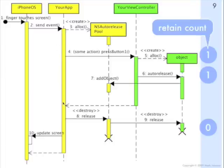We're exiting out of the event loop here, and after all those things have happened, the iPhone can go ahead and actually update the screen with the changes that you made, and the event loop finishes.